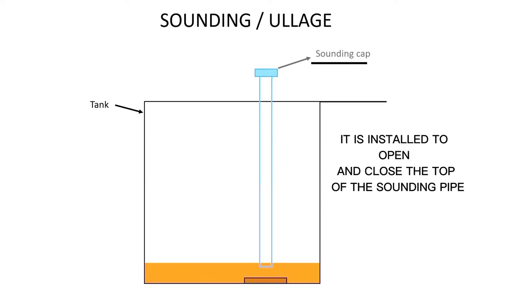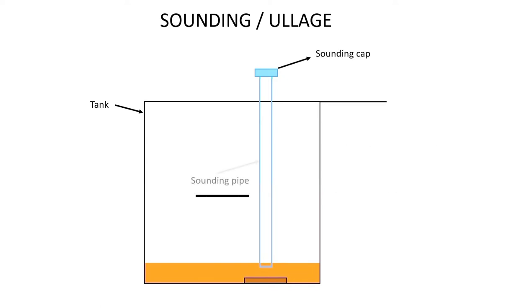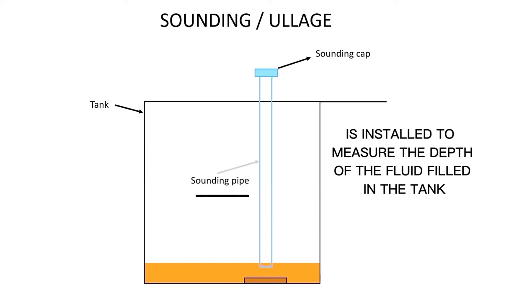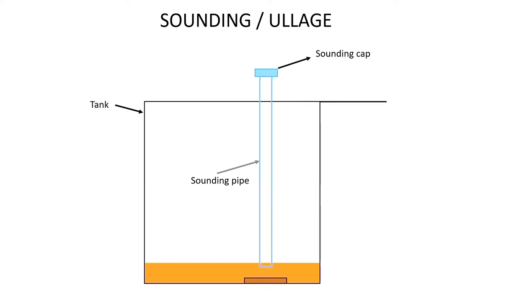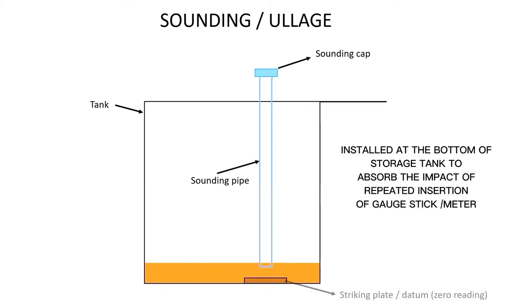It is installed to open and close the top of the sounding pipe. Sounding pipe is installed to measure the depth of the fluid filled in the tank. Striking plate is installed at the bottom of storage tank to absorb the impact of repeated insertion of gauge stick and meter.